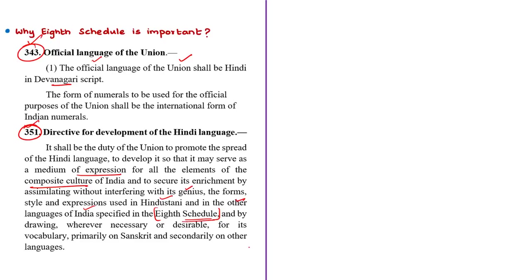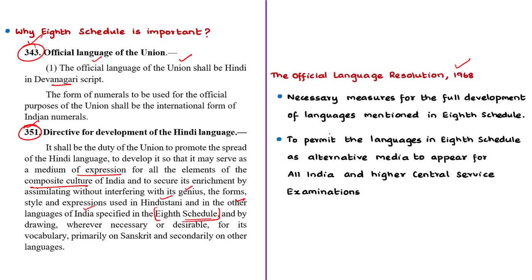A resolution was adopted in 1968 in both houses of Parliament, known as the Official Language Resolution of 1968. As per this resolution, the government shall take necessary measures for the full development of languages mentioned in the Eighth Schedule. The government also suggested to UPSC that all languages included in the Eighth Schedule and English shall be permitted as alternative media to appear for All India and higher central services examinations. So a candidate can appear for such exams in any of the languages mentioned in the Eighth Schedule — this is the importance of this schedule.